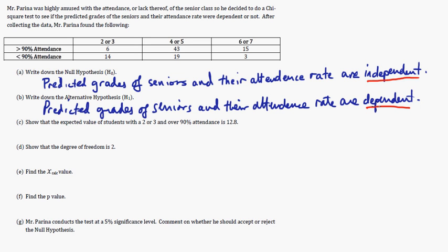Now, show that the expected value of students with a 2 or 3 and over 90% is 12.8. So if we're going to look at this, 2 or 3 and above 90%, that's going to be this right here. Now, to do expected value, they often do this. They ask you, you can find it on the calculator, but what you need to do is 62, 18, you need to get the total of the, what I did is I just added up the columns there and then I'm going to add up the rows.